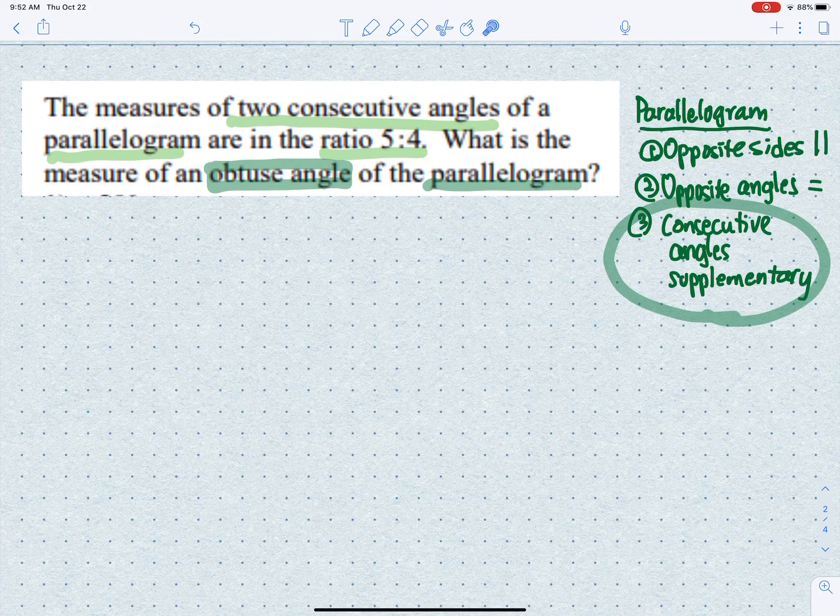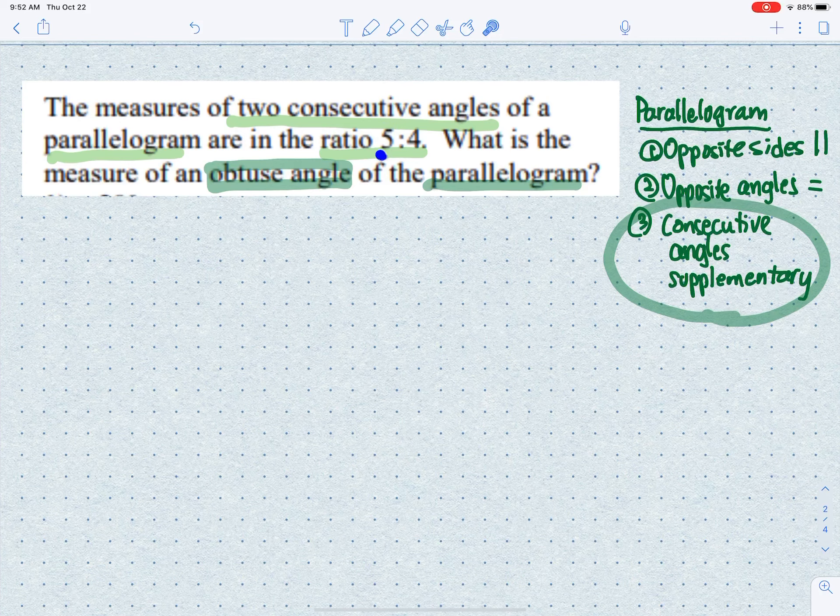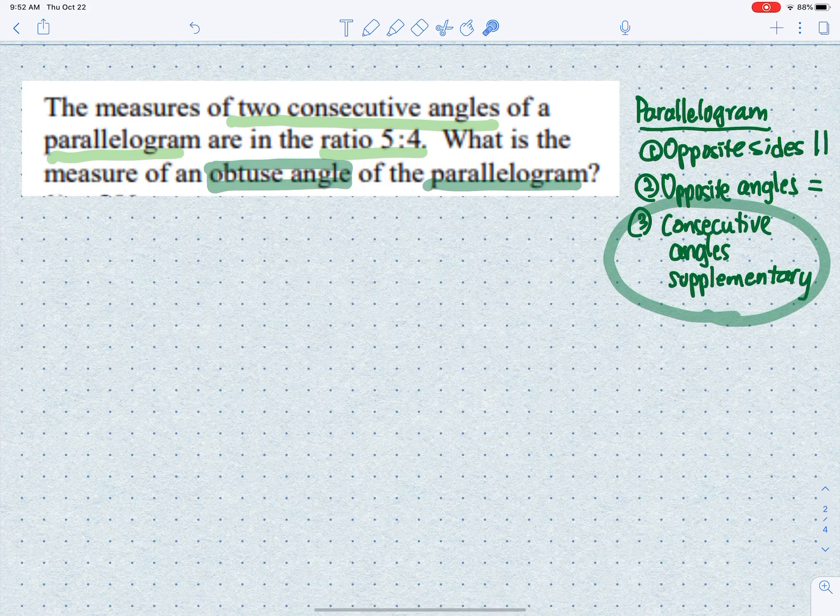The problem tells us the angles are in the ratio of 5 to 4. As we learned at the beginning of the year when dealing with ratios, this doesn't mean it's exactly 5 degrees and exactly 4 degrees. It's a multiple of these numbers.